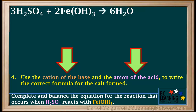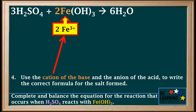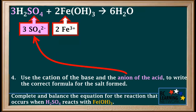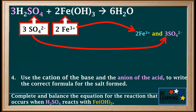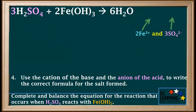Now we'll use the cation of the base, Fe(OH)₃, and the anion of the acid, H₂SO₄, to write the correct formula for the salt. The cation of the base, Fe(OH)₃, is the Fe³⁺ ion, and there are two of them. The anion of the acid, H₂SO₄, is the sulfate ion, SO₄²⁻, and there are three of them. Two Fe³⁺ ions and three SO₄²⁻ ions form the salt Fe₂(SO₄)₃.